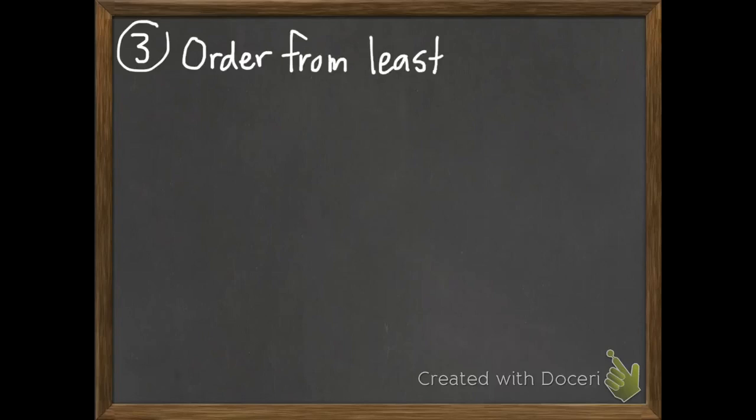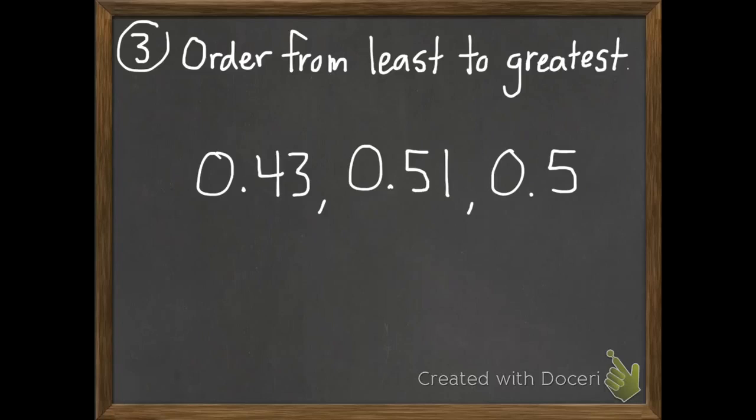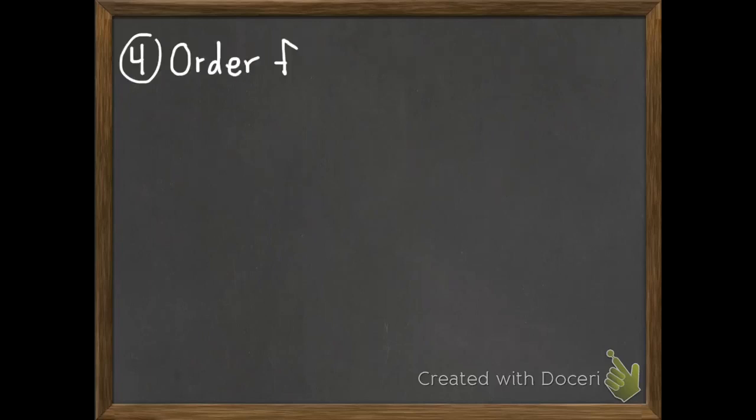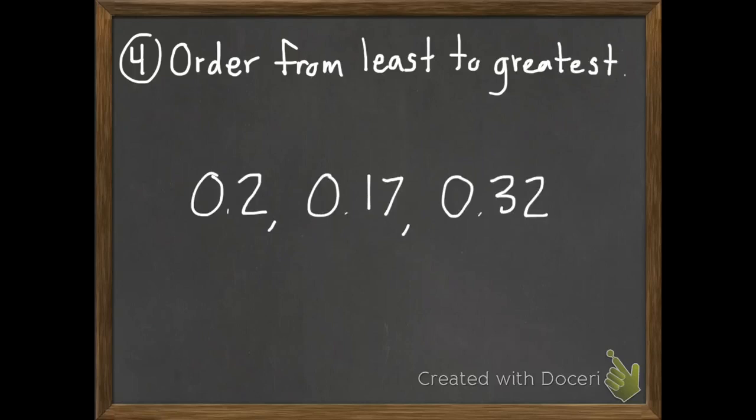Number three. Order these from least to greatest. 43 hundredths, 51 hundredths, and 5 tenths. And last of all, order these from least to greatest. 2 tenths, 17 hundredths, and 32 hundredths.